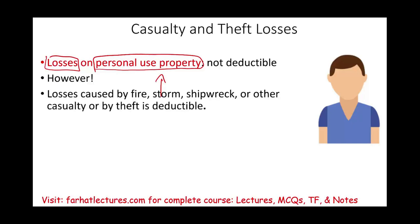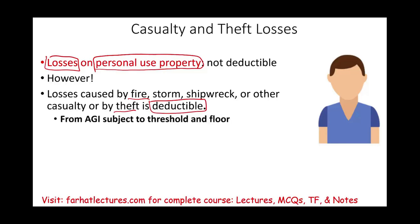However, if you incur a loss from personal use property that's caused by fire, storm, a car accident, or by theft, that is deductible. And that's deductible from AGI — from adjusted gross income — subject to a threshold and floor.